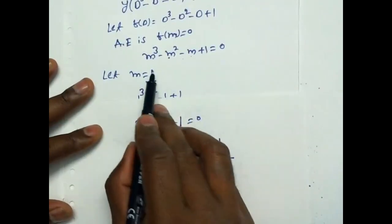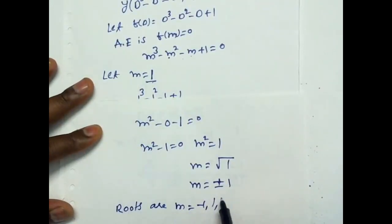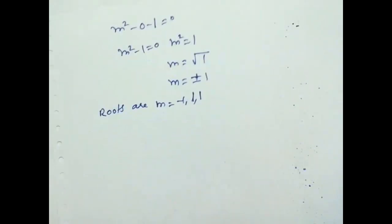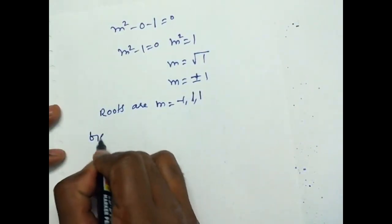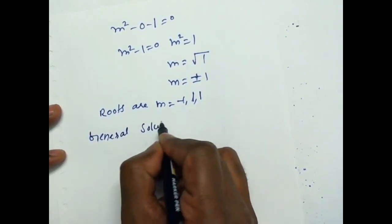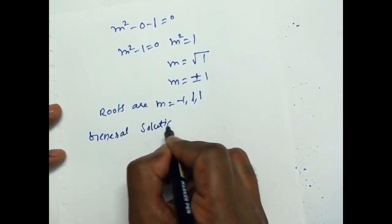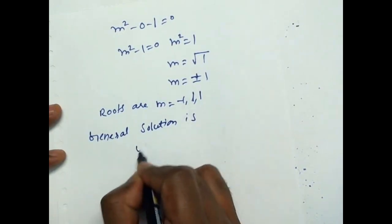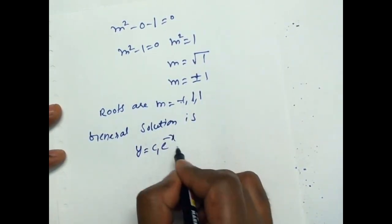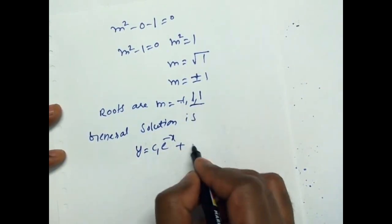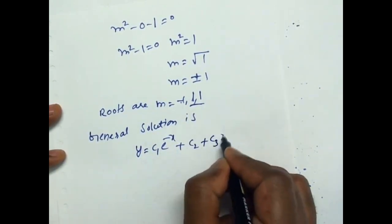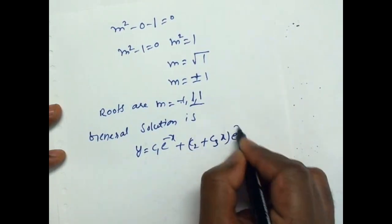Since M equals 1 is a repeated root and M equals minus 1 is a distinct root, the general solution is: y equals C₁·e^(−x) plus (C₂ plus C₃·x)·e^(x). Thank you.